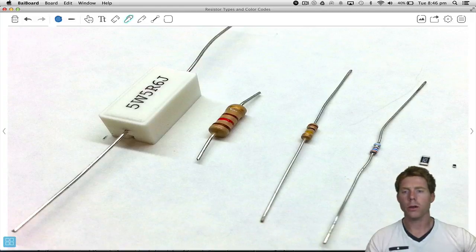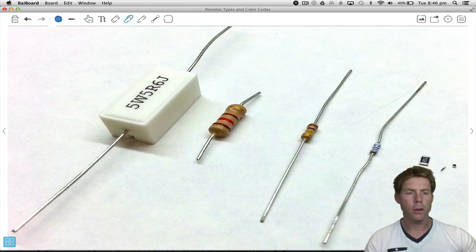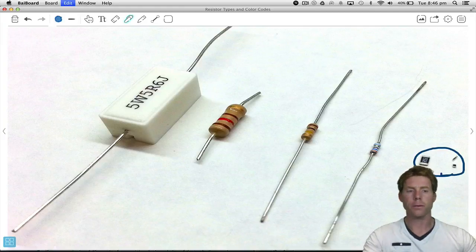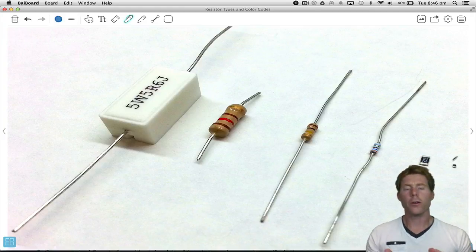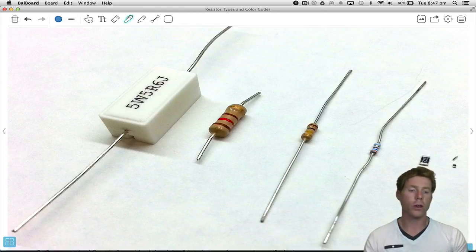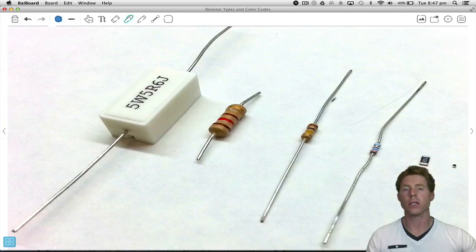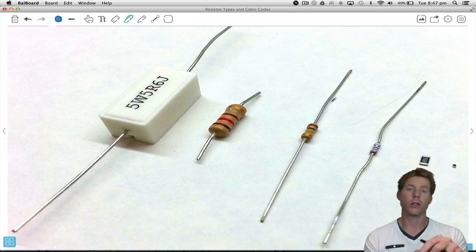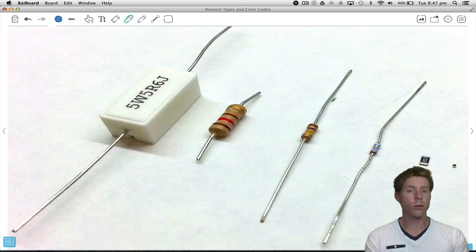Now something else here is most of these resistors have legs coming out of them, as you can see here. But these two little guys don't have legs. Now when you're experimenting as a hobbyist, you're building your circuits, you'll most probably be using these ones with legs coming out of them, because they're really easy to plug into prototyping boards or to put into circuit boards.